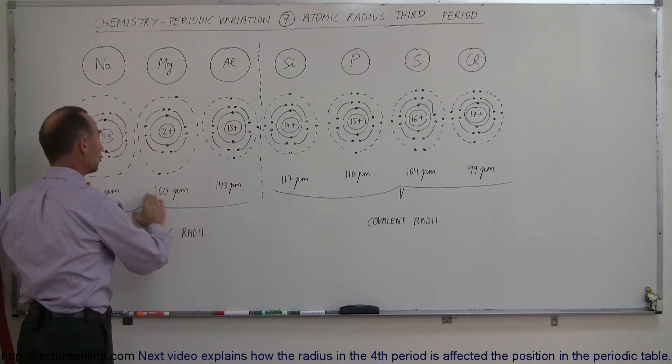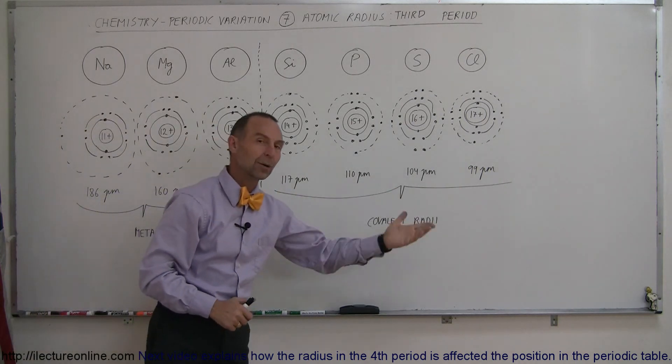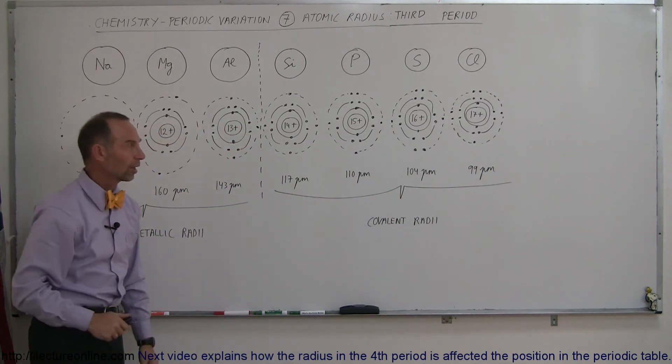Do notice that over here we use the metallic radii. Here we use the covalent radii which is more appropriate for those elements.